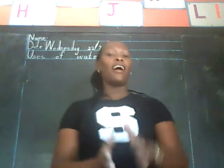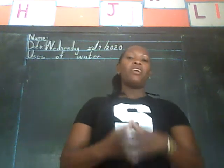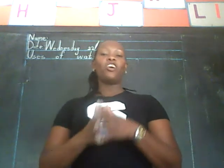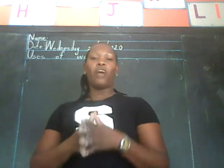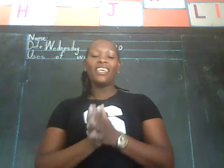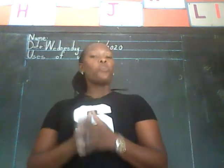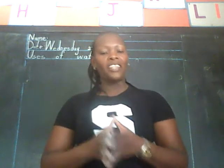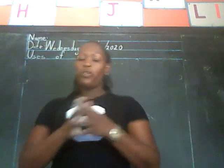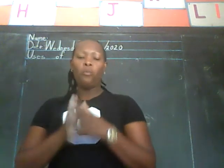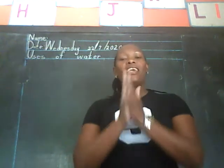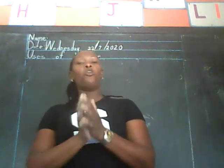Old Macdonald had a farm, e-ya e-ya y-o. And on his farm he had a cow, e-ya e-ya y-o. With the moo moo here and the moo moo there. Here moo, there moo, everywhere moo moo. Old Macdonald had a farm, e-ya e-ya y-o.